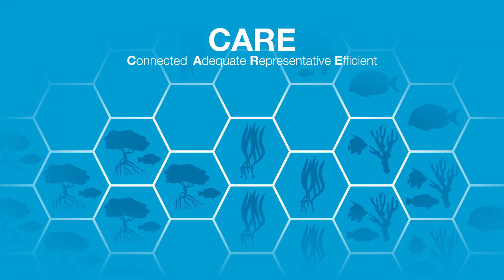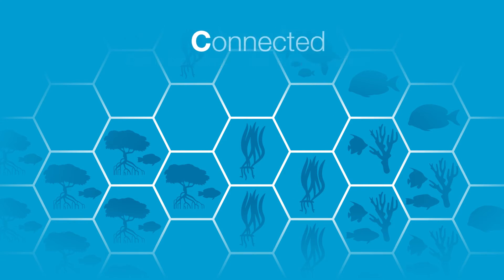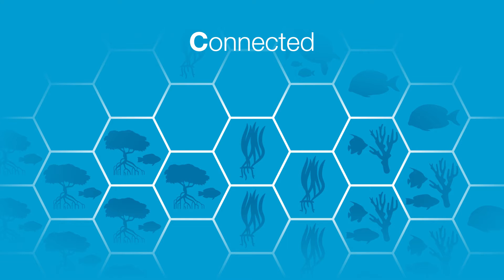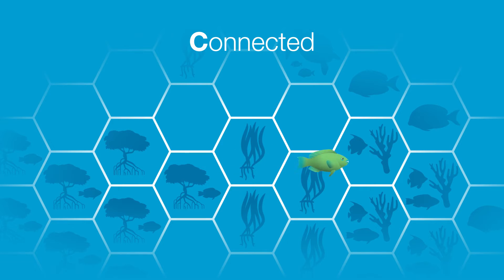The first principle of conservation planning is to have a well-connected system. Connectivity in marine ecosystems is important, because biophysical processes transport fish and coral larvae and mangrove propagules between habitats. Also, many fish species live in mangroves and seagrass when they are young, and migrate to reefs as they mature.